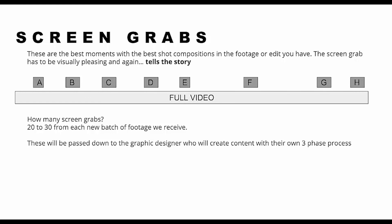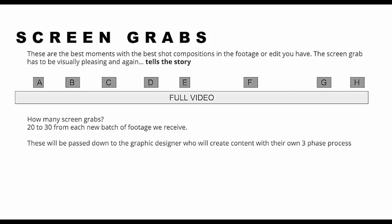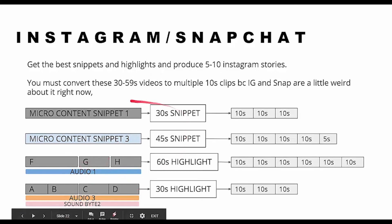For Instagram and Snapchat, pretty much get the best highlights and snippets and produce five to ten Instagram stories. You don't necessarily have to make all of the micro content into Instagram stories — just pick the ones you believe are best. You've got to convert these 30 to 59-second videos into multiple 10-second clips. For example, a 30-second snippet becomes three 10-second renders based on the story format. A 45-second snippet gets rendered into one 15-second Instagram/Snapchat clip. Audio content — pick the most thought-provoking, insightful, inspirational, practical portion of the content.